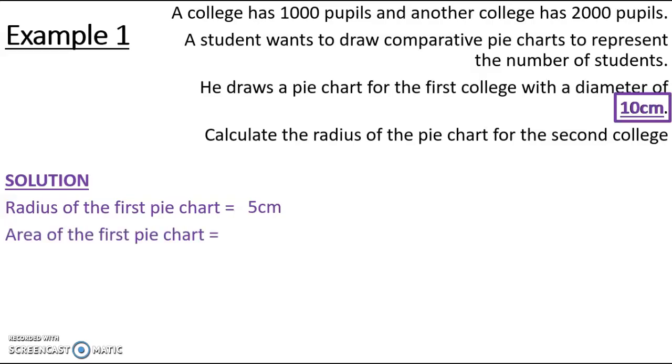So I can work out the area of the first pie chart. Area is pi r squared. I'm going to use 3.14 for pi just for simplicity here. And if my radius is 5 centimeters, it's going to be 3.14 times 25, which is 78.5 centimeters squared.